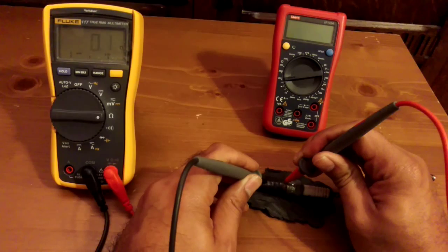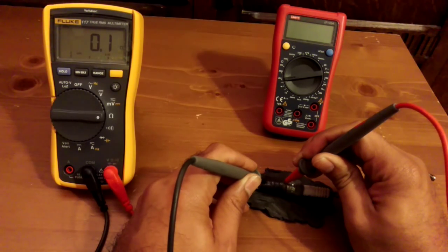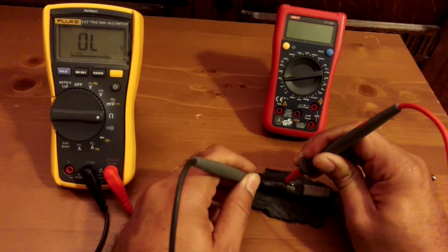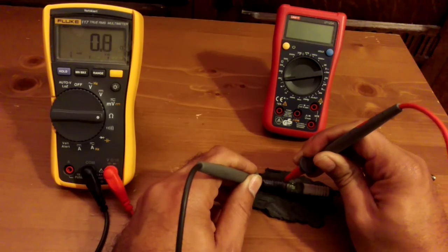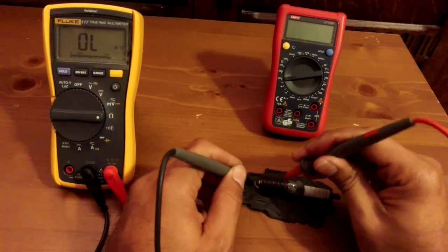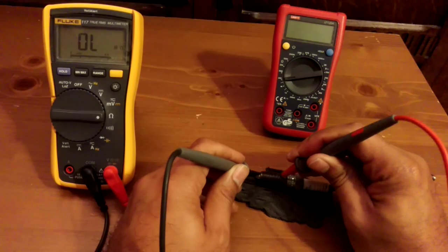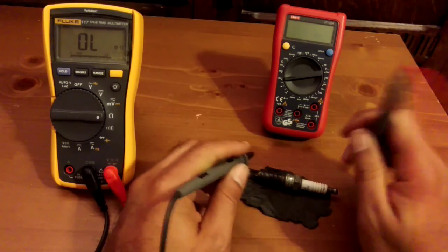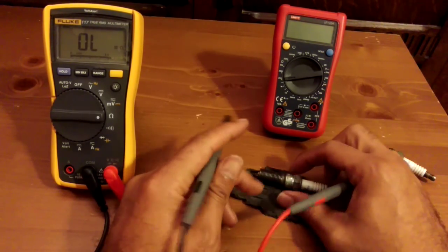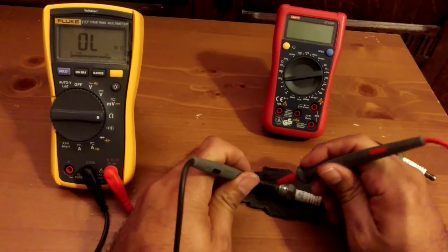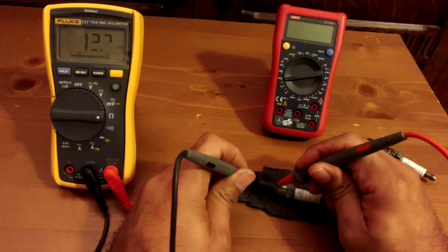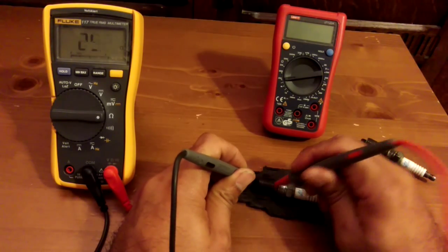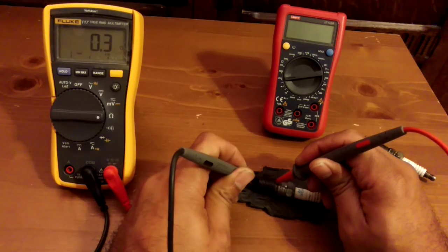So you see there we're getting 0.1, and all you do is test different parts of the ground side. You can do it right on the electrode tip, not the electrode tip, the spark plug tip, the curved part. Just work your way around the ground side, checking lots of different places. Each time you check though, just make sure you're getting those nice low figures.